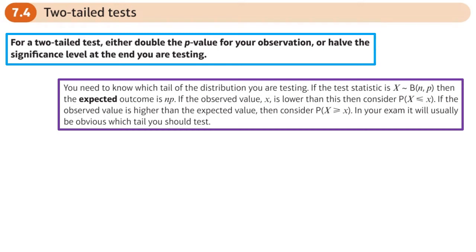This is the fourth and final section on hypothesis testing in chapter two: the two-tail test. In a two-tail test, you split the significance level in half. You use it when you're looking for a value that could be an increase or a decrease. We know it's a two-tail test because H1 will say something like 'the probability is not equal to' some value — meaning it could be a decrease or an increase.